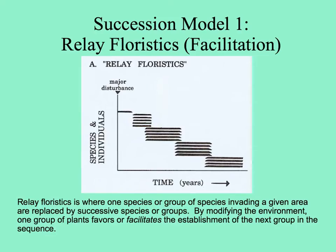The first model is called relay floristics. The idea is that after a major disturbance, one or a few species come in, then give way to a set of other species with very little overlap, and after a while another set of species comes in, and so on. One group of plants, by changing the environment with their presence, facilitates the establishment of the next group—which is why relay floristics is sometimes called facilitation.